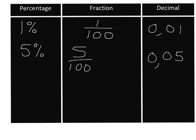Five over 100 is not a fraction in its simplest form, so we can simplify it. We divide the top and the bottom by five: the top gives us one, the bottom gives us 20. So five percent is the same as five over a hundred, which is the same as one over 20, and that's the same as 0.05.